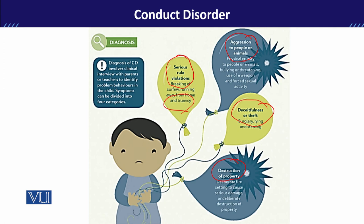जब इस किस्म का pattern of behavior किसी बच्चे के अंदर exhibit होना शुरू हो जाए, तो उस वक्त हम कहते हैं कि यह behavior conduct disorder के under fall करता है। Conduct disorder के जो four points हैं, उनकी basis पर हम देखते हैं कि behavior conduct disorder के under fall कर रहा है या नहीं। एक important बात यह है कि conduct disorder का onset early childhood में भी हो सकता है और adolescence में भी।